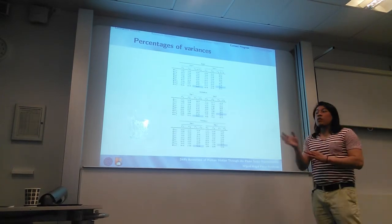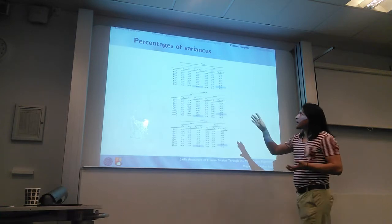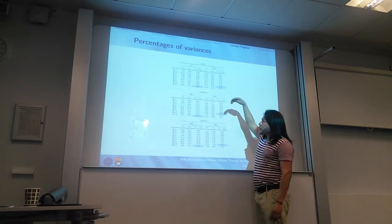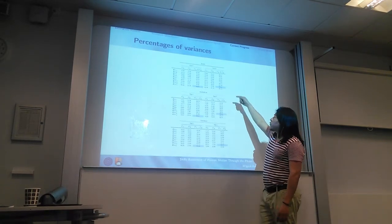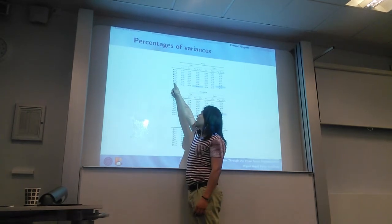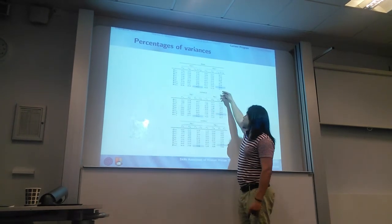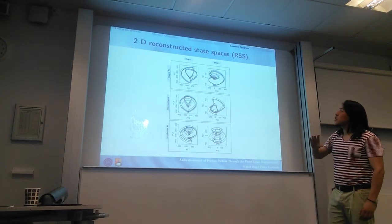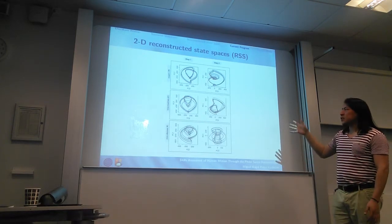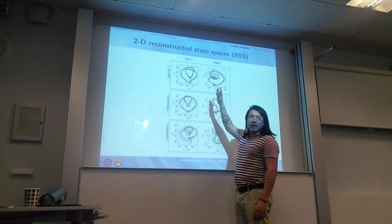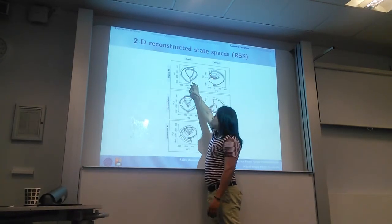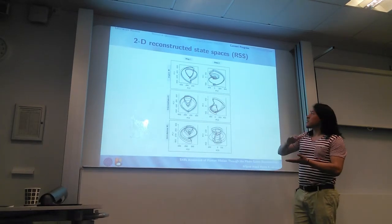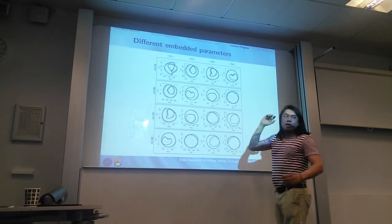By choosing these parameters, we apply the PCA algorithm. We can see in this table that the highest variance values are for the magnetometer data in the Y and Z axes for the expert, non-dancer, and intermediate groups. This is the main important result of my research, because we can see, at least visually, that the expert, intermediate, and non-dancers have different levels of dexterity in step one and step two.